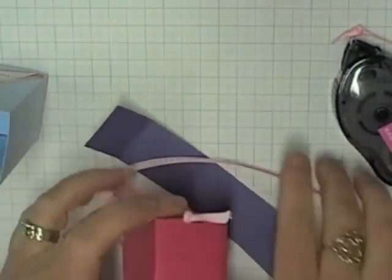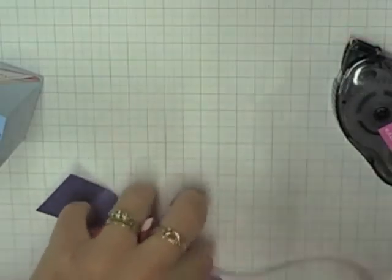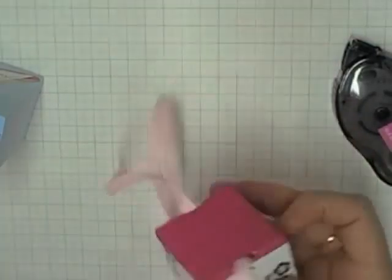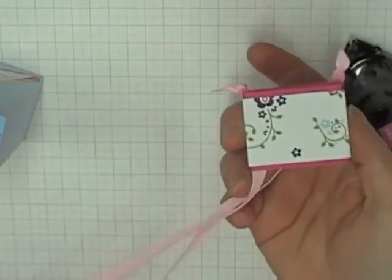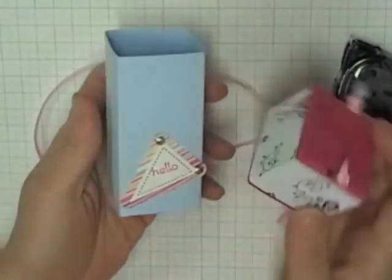So then your lid will look like this one with two strings coming through it and little knots on the top. Okay, so that's basically your box created. Next we've got a piece of cardstock that is three and a quarter inches tall.